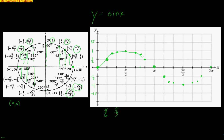So what we get is this nice, smooth wave — that's why the sine function makes what we call a wave graph. Our inputs are the angles as we go around the unit circle on the x-axis, and as we go around, the y-coordinates start to grow, cap out at 1, shrink back to 0, dive down to negative 1, and then go back up. This same pattern continues if we keep going around the circle.